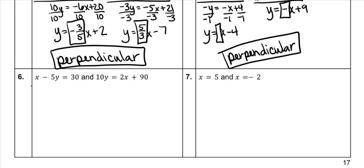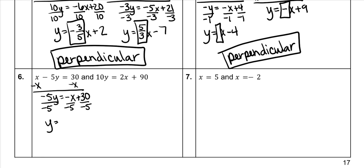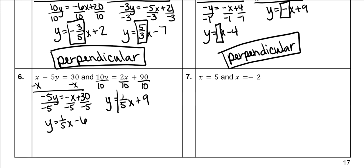Subtract x from both sides, bring down y — your constant and variable cannot be combined. Divide both sides by everything with y. That gives y equals positive 1 fifth (negative over negative), and 30 divided by negative 5 is negative 6. For the other equation, x is already on the other side, so divide everything by what's with y: y equals 2 over 10 reduced to 1 fifth, and 90 divided by 10 is 9. Both slopes are 1 fifth, making these parallel.